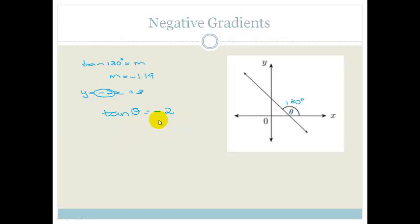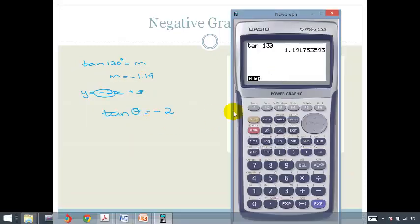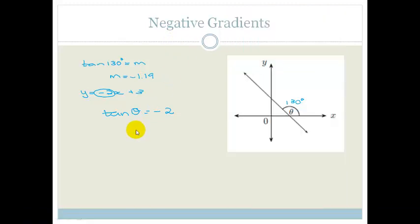Then do you agree that we'd know that tan of theta is equal to negative 2. So then you'd get the calculator out again and we go, shift tan of bracket, negative 2, and please grade 11s, make sure you're always in degrees. And we get minus 63.43.